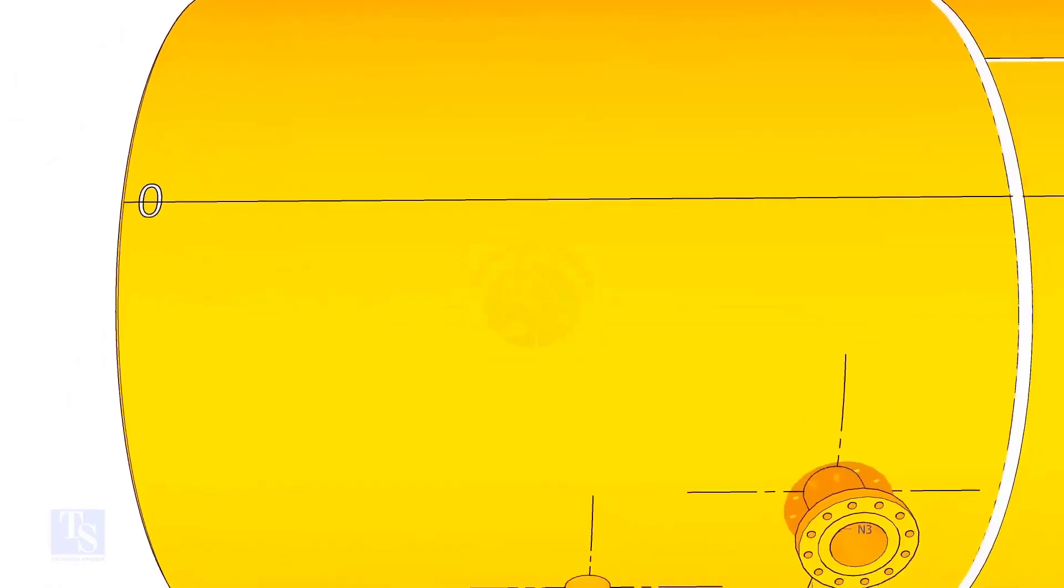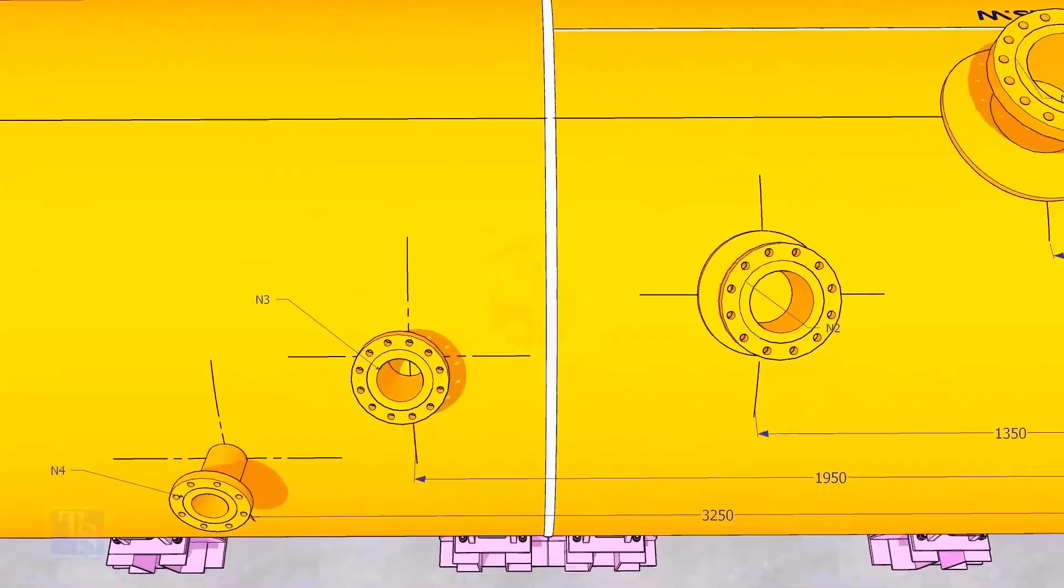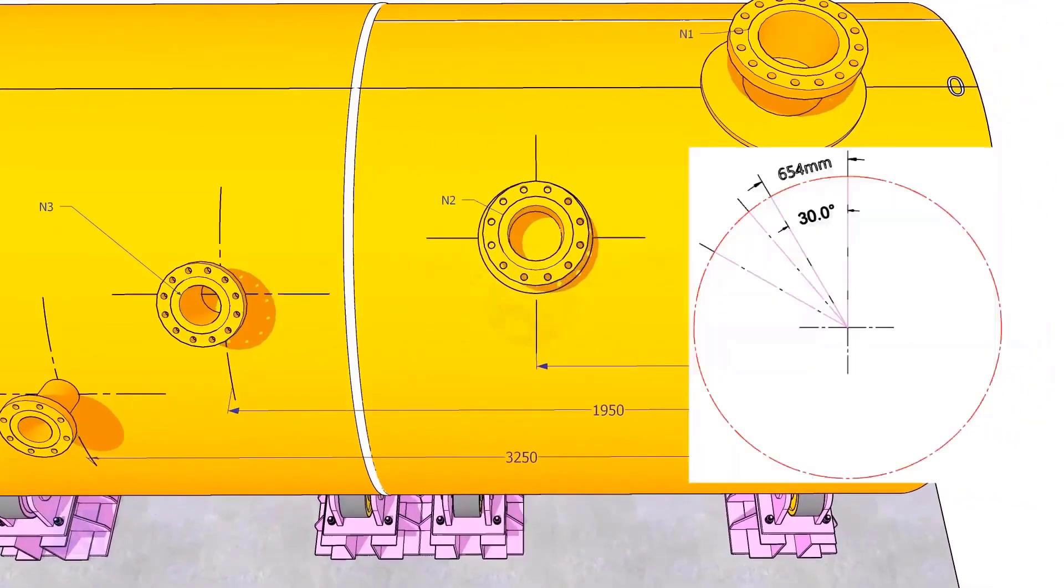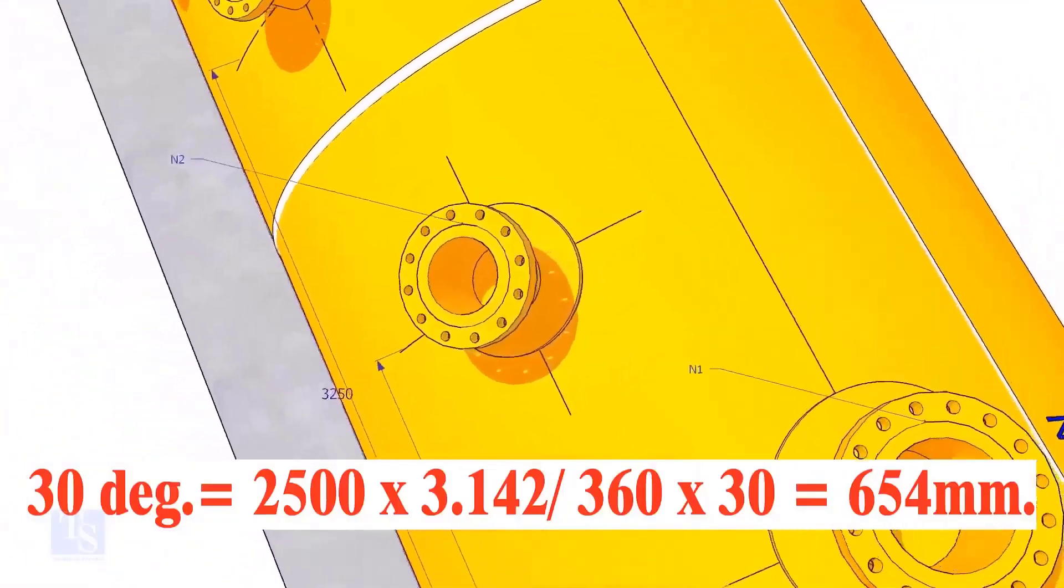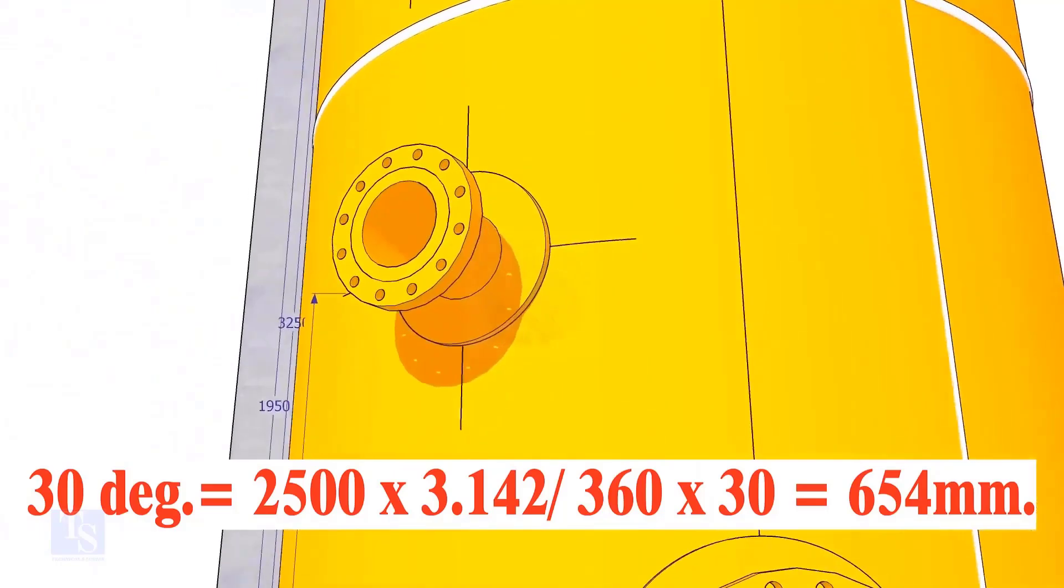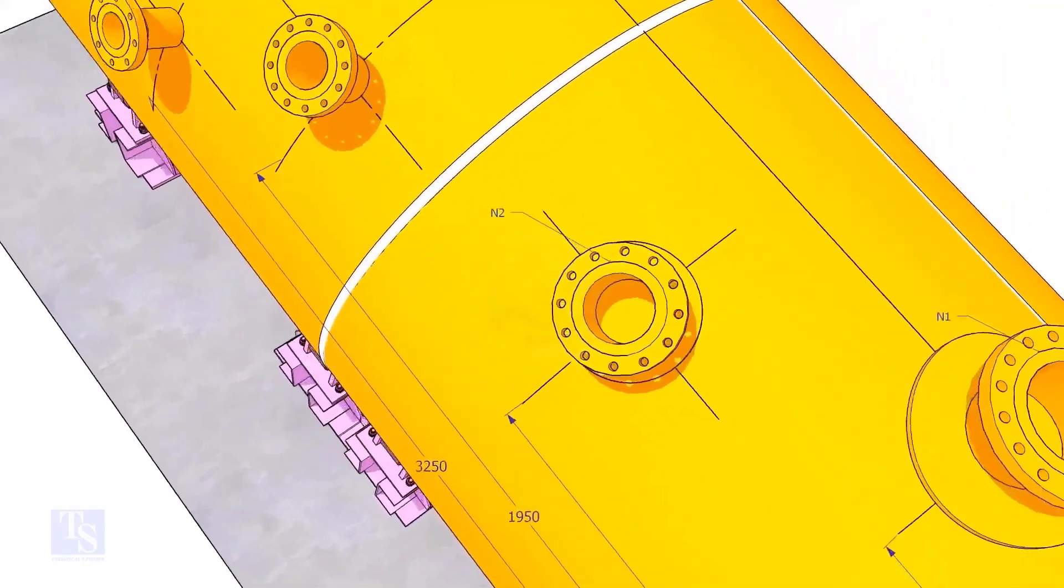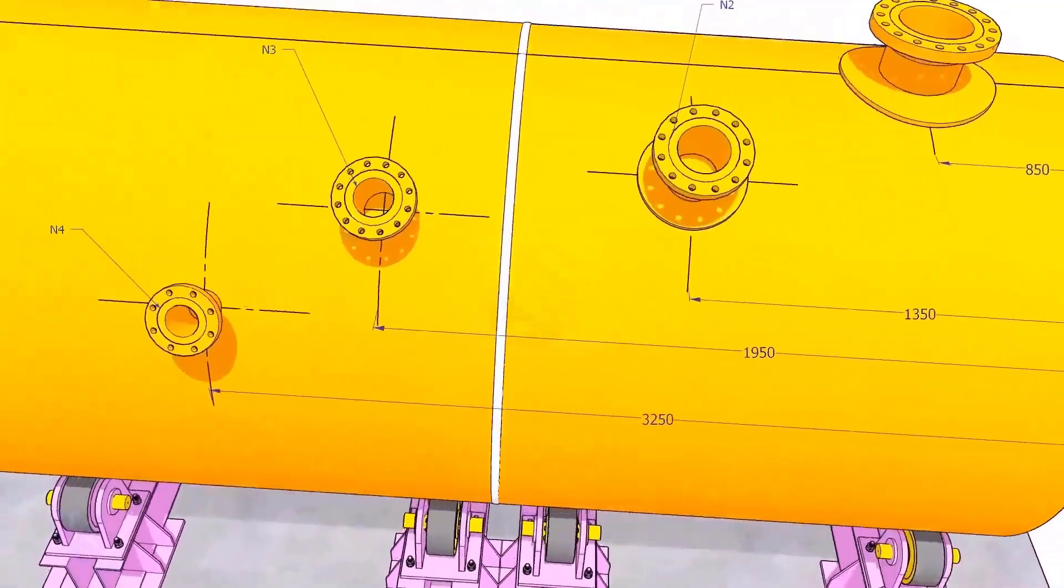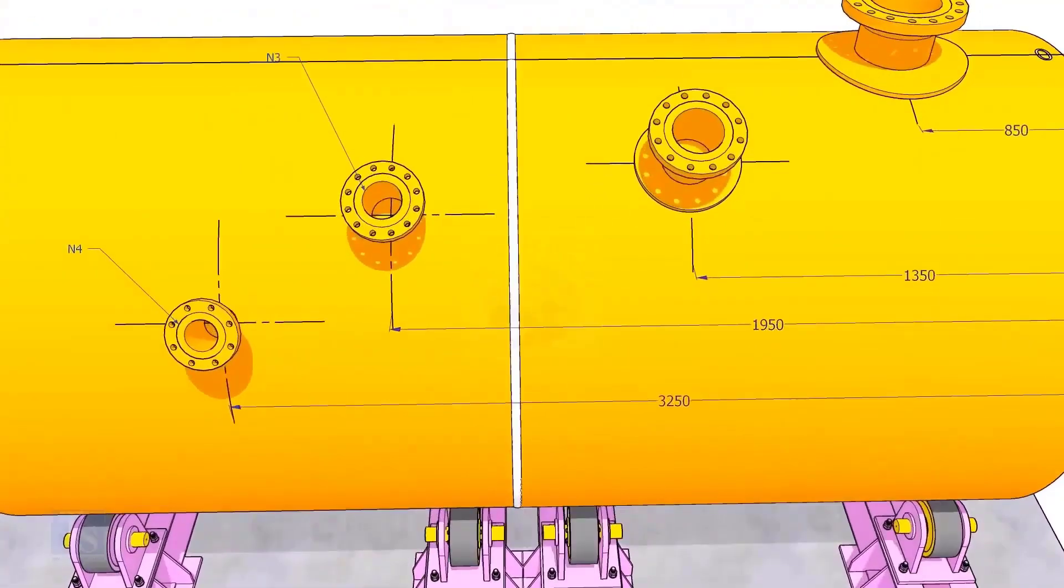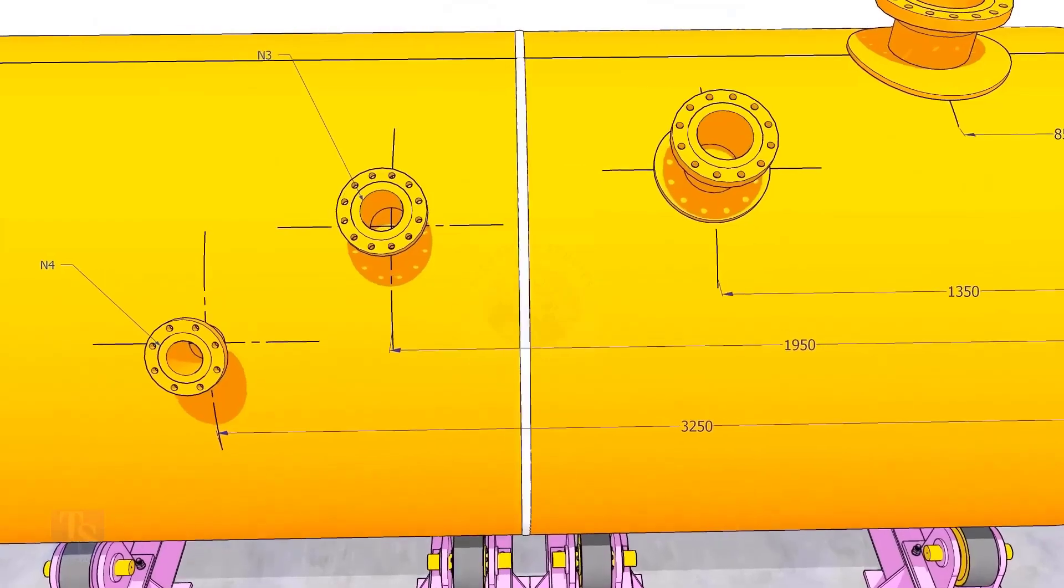Next, let us mark the center of nozzle N2. This nozzle comes at 30 degrees anticlockwise. Convert 30 degrees to arc length and mark this dimension at two locations as shown. Then draw an arc of 1350 millimeters from the edge of the shell intersecting this line. This point is the center of nozzle N2.